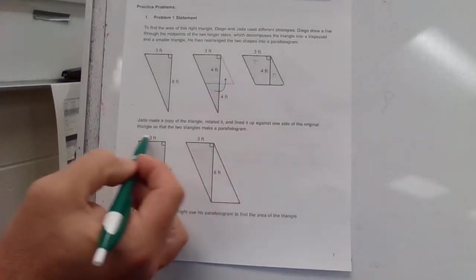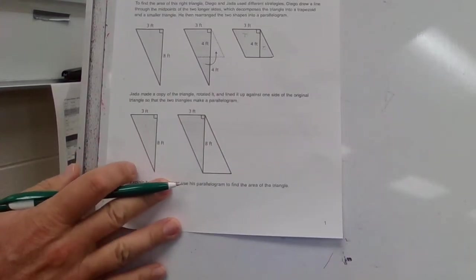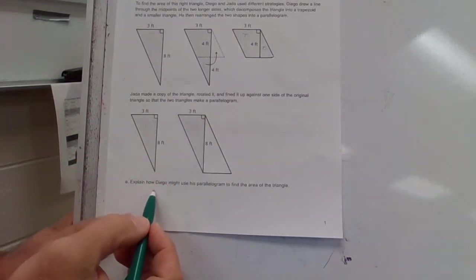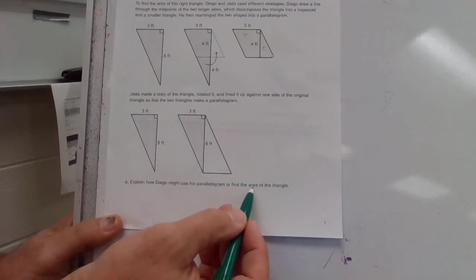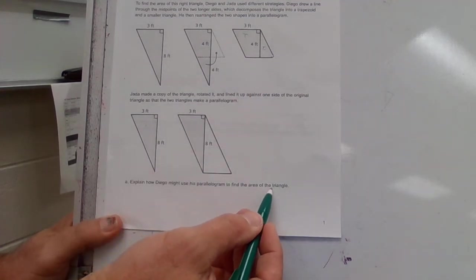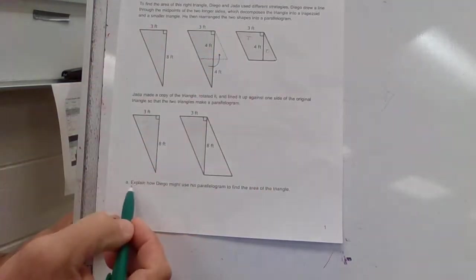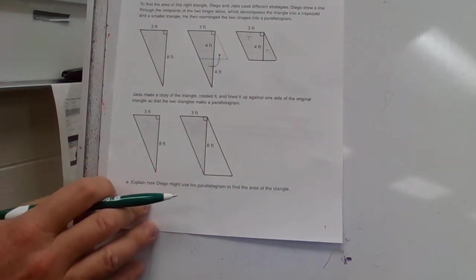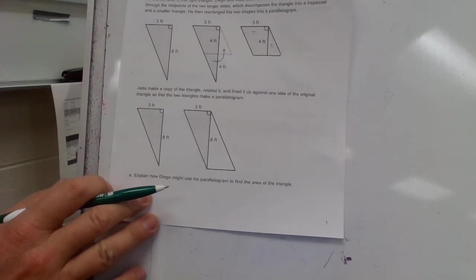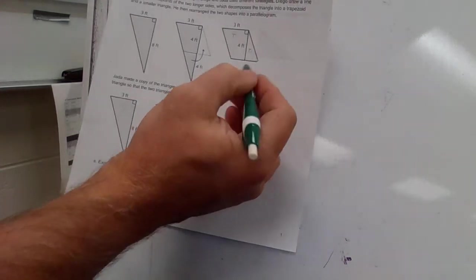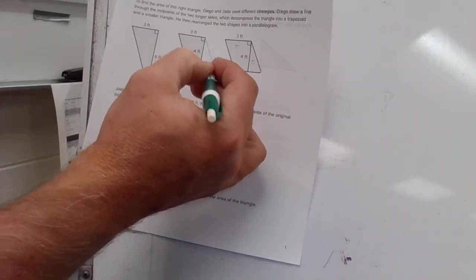The two triangles make a parallelogram. Explain how Diego might use his parallelogram to find the area of a triangle. We've talked about what they've done there, and you're explaining how Diego might use his parallelogram to find the area of the triangle, which is right here, that empty triangle right there.